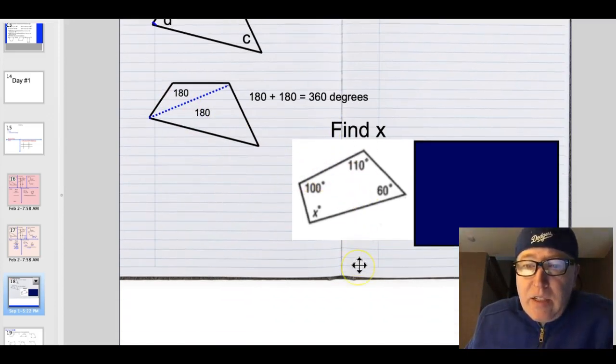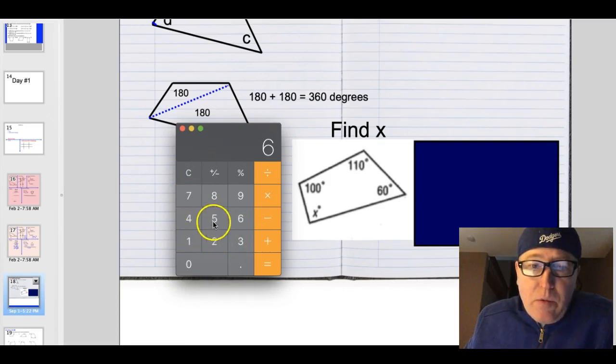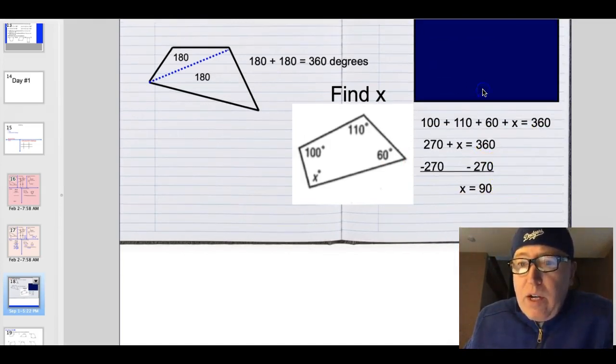So the first thing we have to do today is find x in this shape right here. So we just grab our calculator and we put in 360 degrees. Just like we used to start with 180 for a triangle. Now we're starting with 360. 360 degrees and we're just going to subtract out this 100, subtract out this 110, and subtract out this 60 degree angle. We end up with 90 degrees for this angle here. Or you can take and add all of these angles up if you'd like and you get 270 degrees plus that last angle is 360. Subtract 270 from both sides. You've isolated the variable and you have x equals 90.